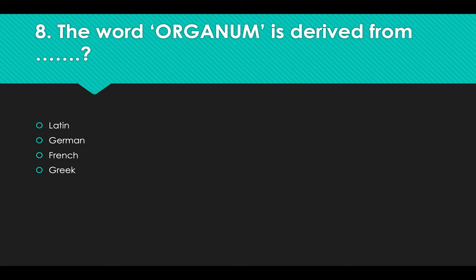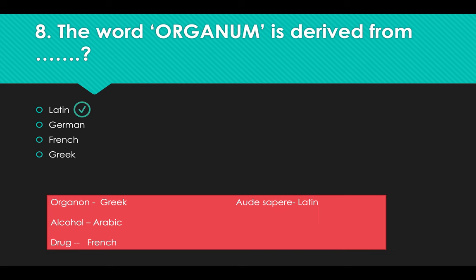The word 'Organon' is derived from: Options: A) Latin, B) German, C) French, D) Greek. Answer: Option A, Latin. Organon is derived from a Greek word; 'Old Sapphire' from Latin; Alcohol from Arabic; Truck from French.